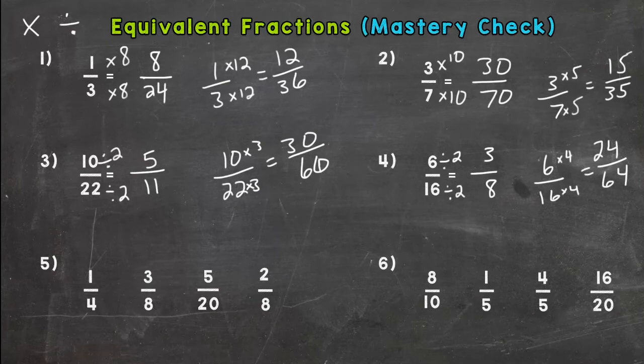So that's numbers one through four. Again, if you follow that rule, do the same thing to both the top and the bottom, either multiply or divide, you get an equivalent fraction. So I'll let you be the judge of numbers one through four.